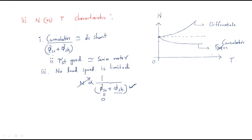The speed versus torque characteristics of the cumulative motor slightly decreases and then maintains a near-constant value. For the differential compound motor, the speed versus torque characteristic increases as torque increases.